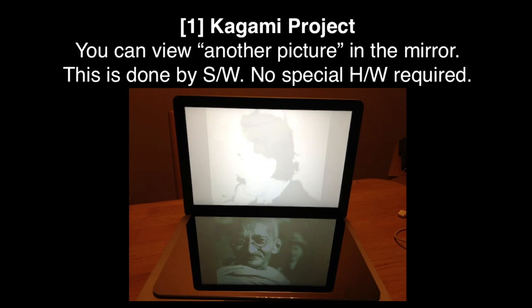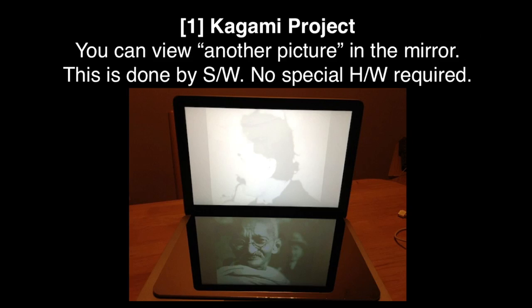When you put a mirror on the keyboard of your Note PC, you can view another picture in the mirror. It means that the picture of the display — the upper picture — and the picture in the mirror — the lower picture — are different. The point is, this is done by only software; no special hardware required. You need a Note PC and a mirror, that's it.